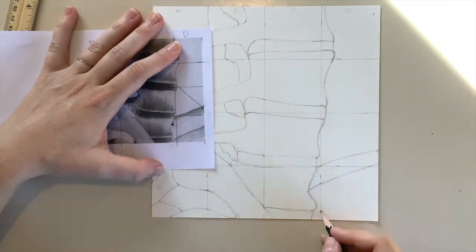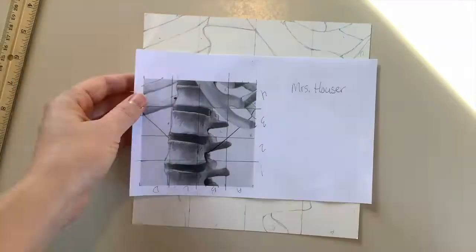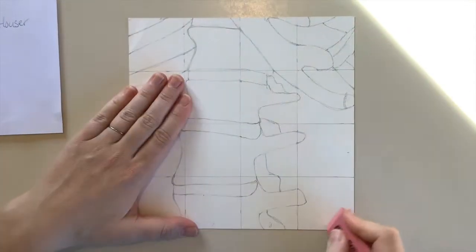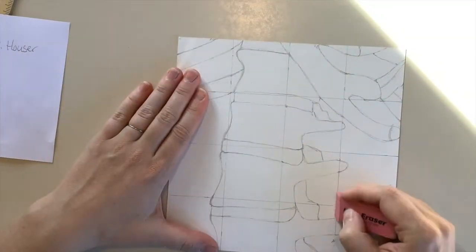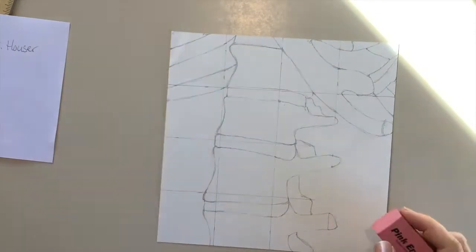I would encourage you when you're done drawing the outlines to maybe go back through and find some of the darker areas of shadow lines and put those into your drawing as well. The last step is to go through and erase out the grid.